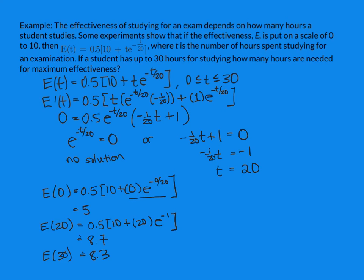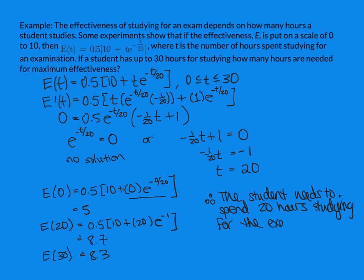It makes sense that spending a lot of time, like going to our maximum number of hours, is probably going to start to lose effectiveness, right? Eventually we've studied everything that we need to. So going beyond what we need to study, you're going to end up forgetting things from before. And so there does come a point where studying is too much. So there's definitely some logic in this answer. And all of our answers are between 0 and 10, which we were told in the question, is where the effectiveness could lie. So therefore, the student needs to spend 20 hours studying for the examination.